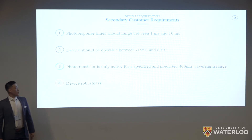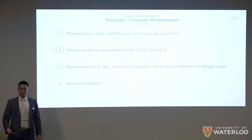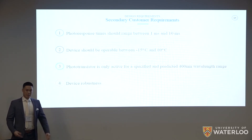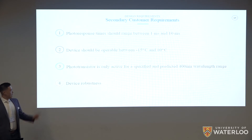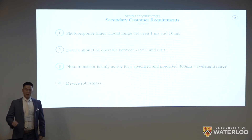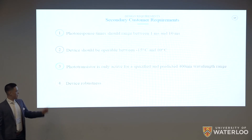For secondary requirements: photo response time should be between one and ten milliseconds, which determines whether the device can support live imaging or surgical use. The device must be operable between negative 50 and 80 degrees Celsius, consistent with what's currently on the market. The transistor should only be active for a specified and predicted wavelength — you want to detect what you intend to detect, not just any light. Finally, the device should be robust.